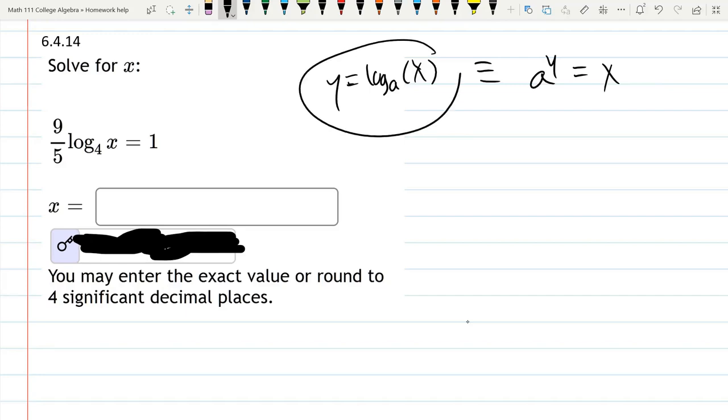If we start it out with this, with the log equation, I'm going to turn it into an exponential. 9 fifths log base 4 of x equals 1. We have a problem, I can't move the base over yet because of this 9 fifths.